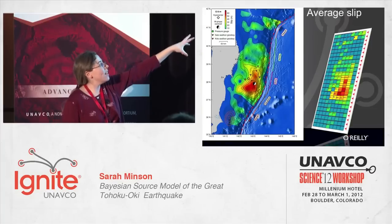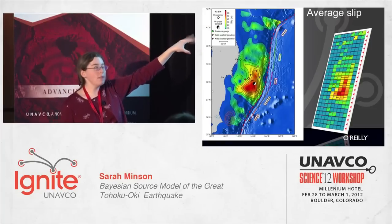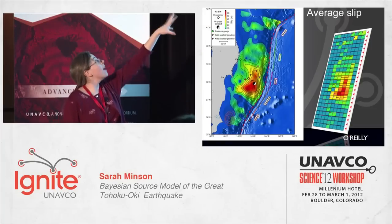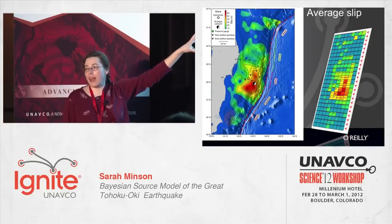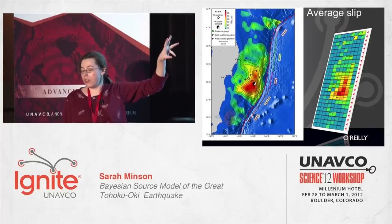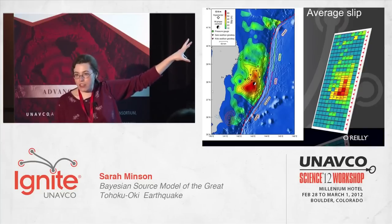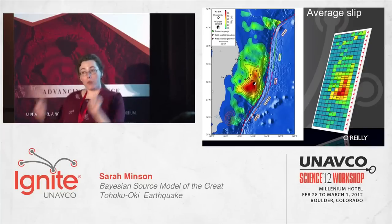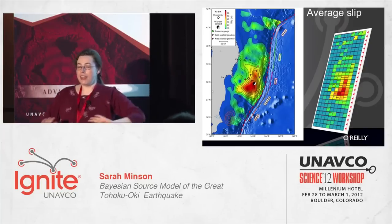On this plot, the tiny dots you can see are the locations of seafloor geodesy and nearshore pressure gauges. In addition to this, we have open ocean DART buoys that give us tsunami data, static GPS onshore, and high-rate kinematic data onshore.